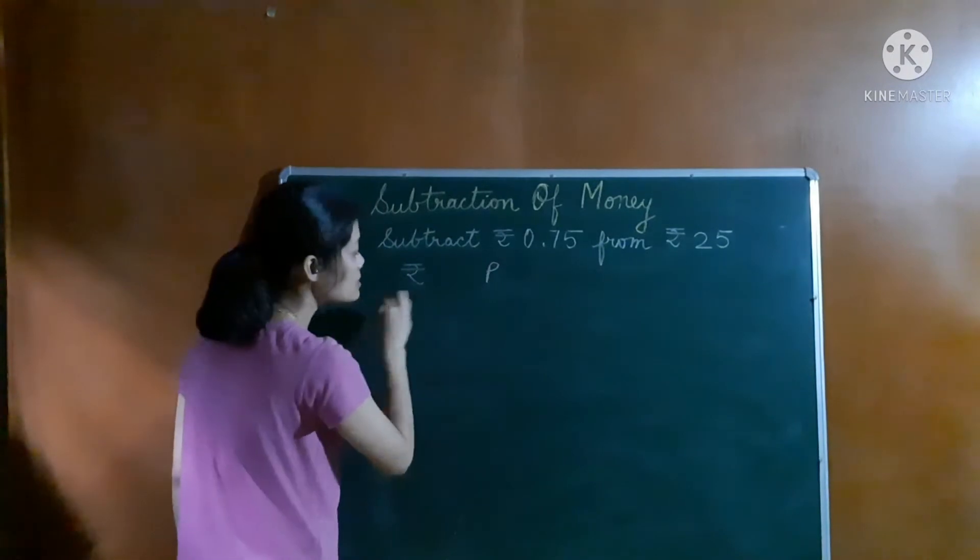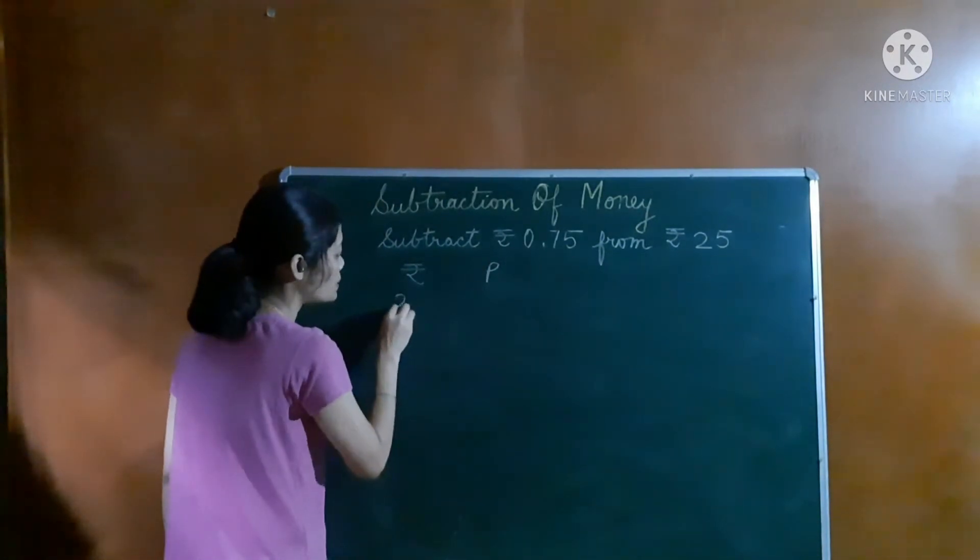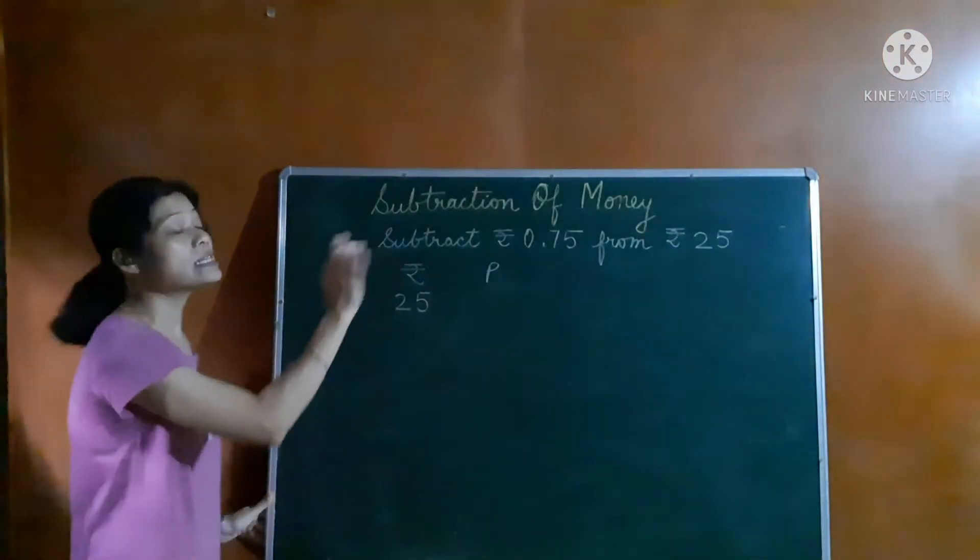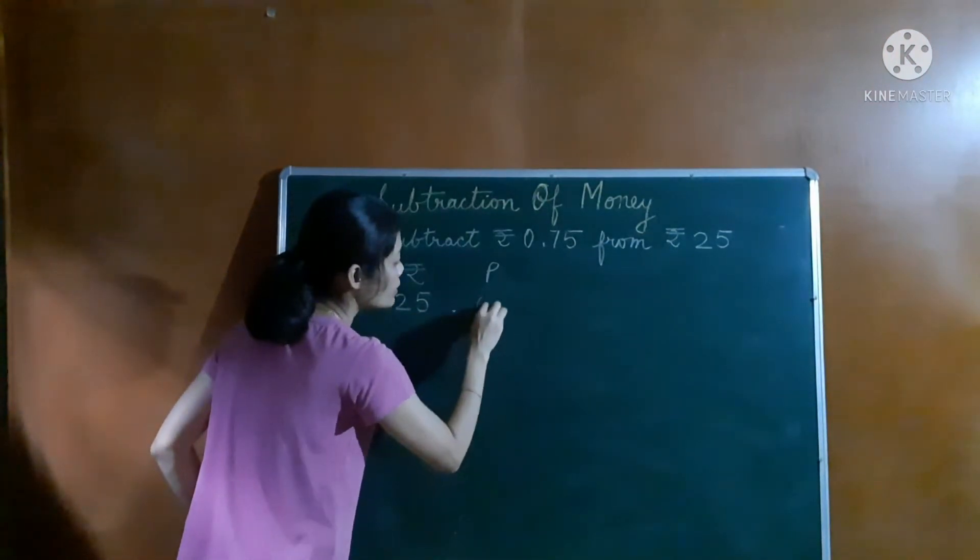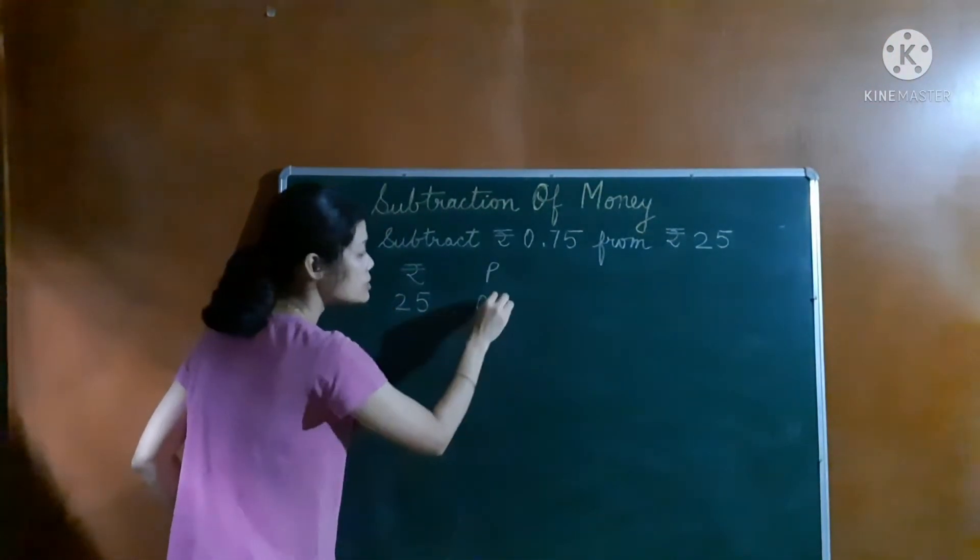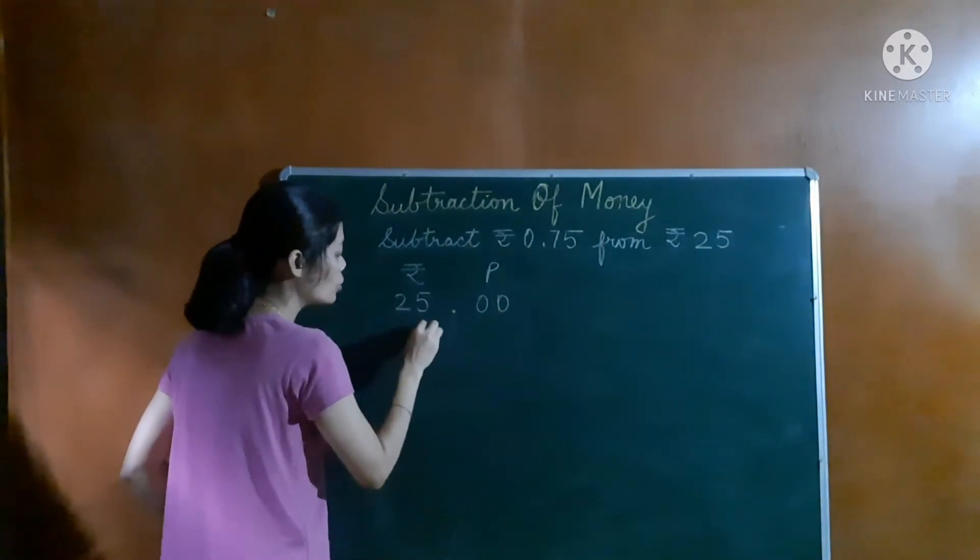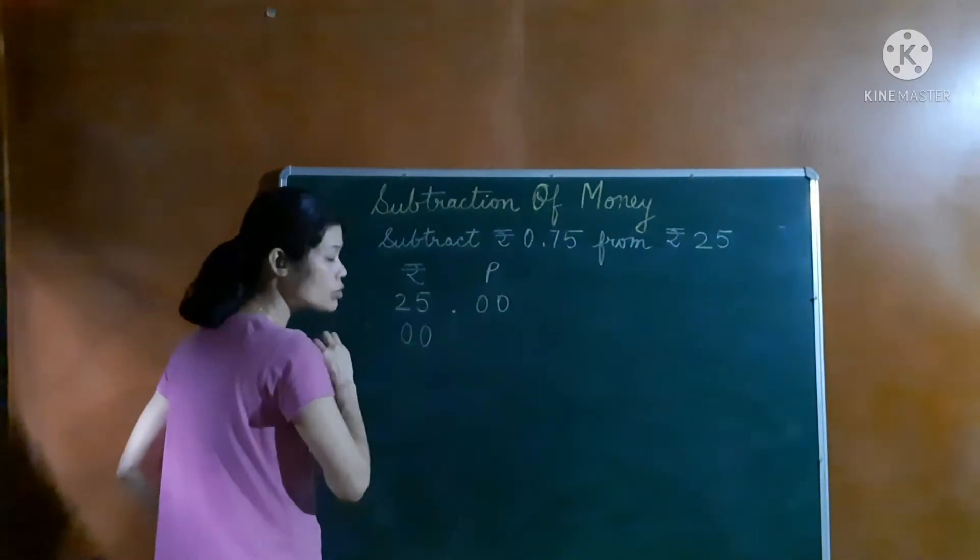First we will write like this, rupees and paise section, then 25 rupees. So we will write 25 in the rupees section. Nothing is mentioned for paise, so we will give 0 for it. 0 means nothing. And here 0 rupees. Since it's 25, 2 digits are there, so we will put 2 zeros.